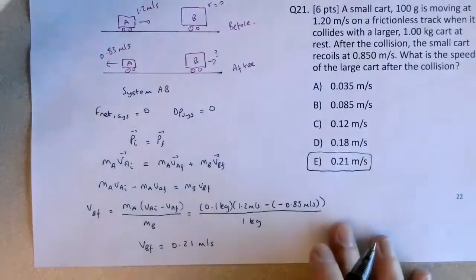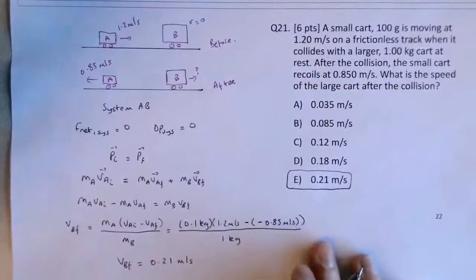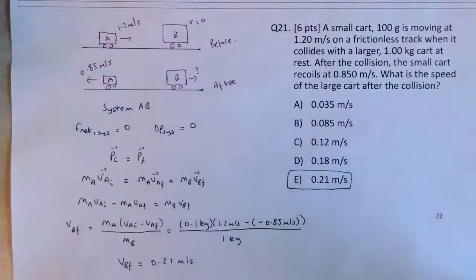Again, just for highlighting between this question and question 20, you've got to be very careful with the signs of the velocities. That means momentum is a vector quantity, and the sign of the velocity that you put into your equations definitely matters. And you've got to be considering the change in direction here.